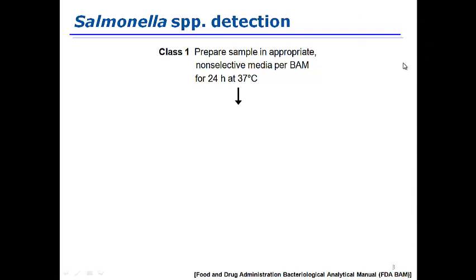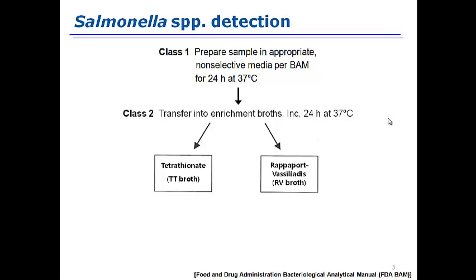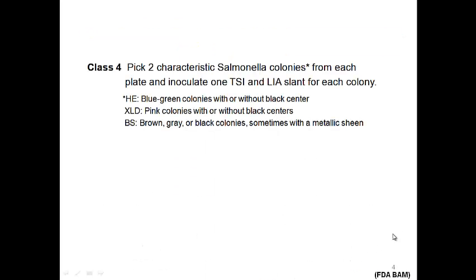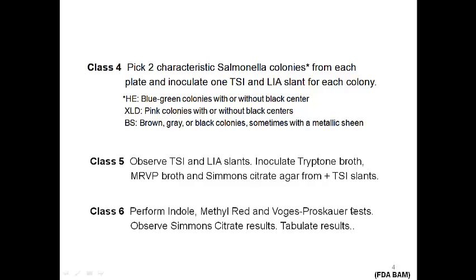According to FDA BAM, there are six steps. The first step is pre-enrichment — sometimes bacteria can be injured in food products, so they need recovery time during the pre-enrichment step. The second step is selective enrichment. The third step is selective agar. The fourth is selective biochemical confirmation, and the last step is other biochemical confirmations.